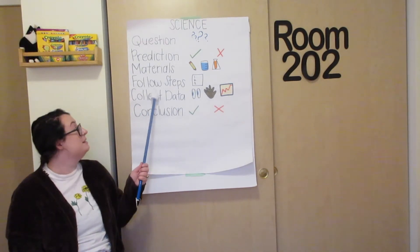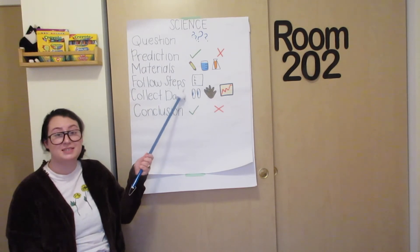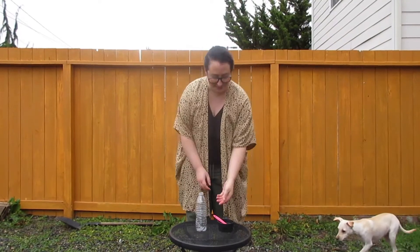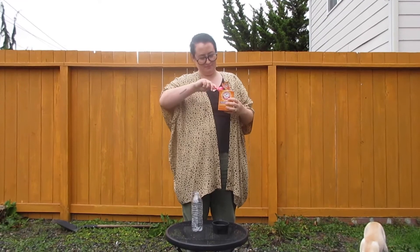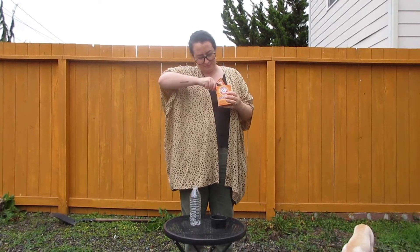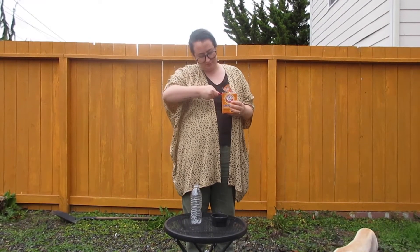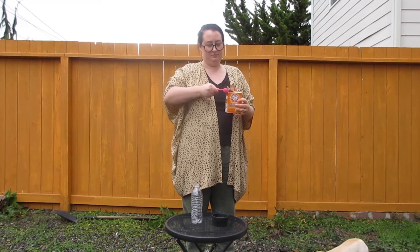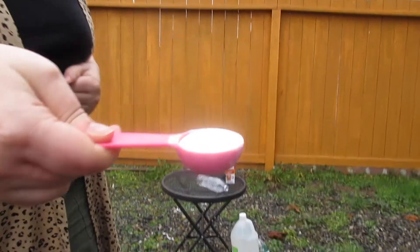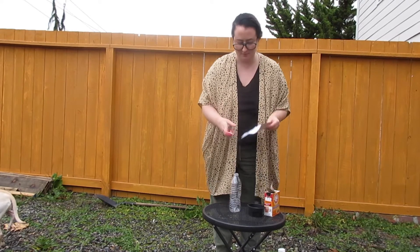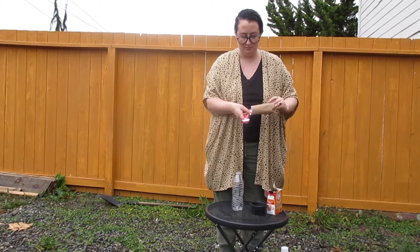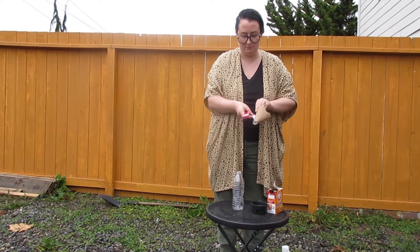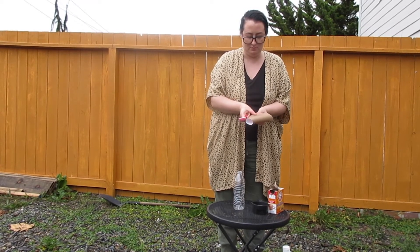Now it's time to follow the steps. For this part, you might want to go outside since it can get messy. First, measure one tablespoon of baking soda. Pour the baking soda into the water bottle. I used a piece of paper to help so I wouldn't spill.